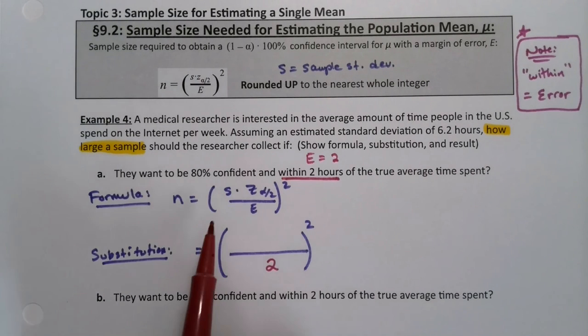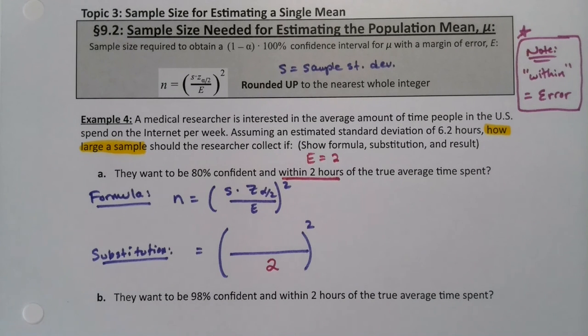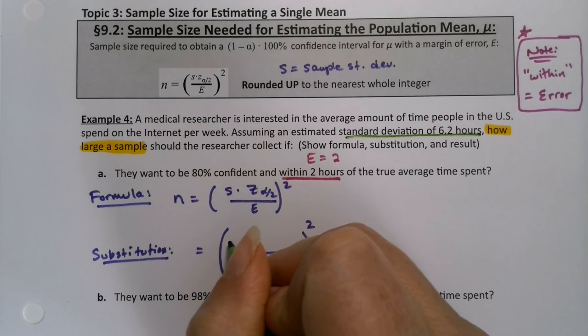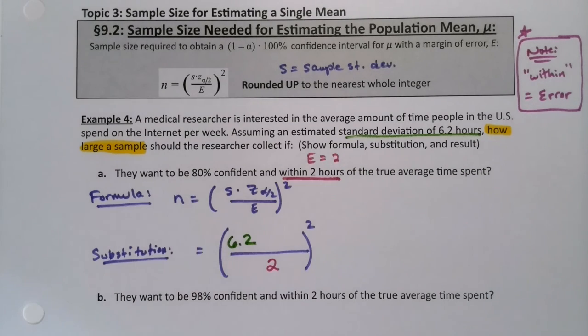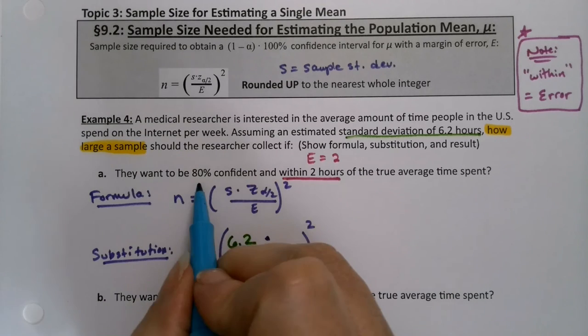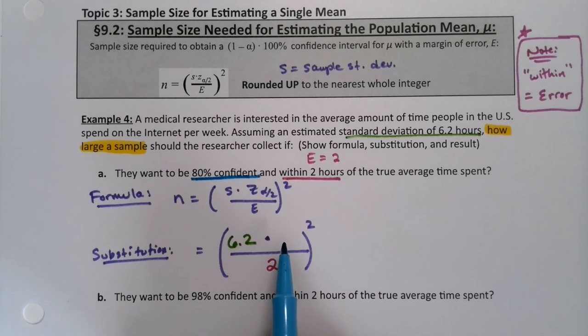So the two is easy. The s is actually very easy because it was given. S is the sample standard deviation, which is right here. So that's 6.2. No problem there. And then I need to find my z for my 80% confidence.